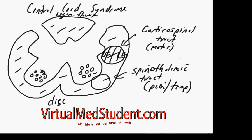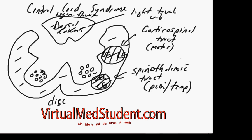The spinothalamic tract — also known as the anterolateral system — controls pain and temperature information. Its organization is similar: upper extremities are located more towards the middle of the cord, and lower extremities towards the periphery. The dorsal columns, located posteriorly, control light touch and vibration sensation and are typically not involved in central cord syndrome.